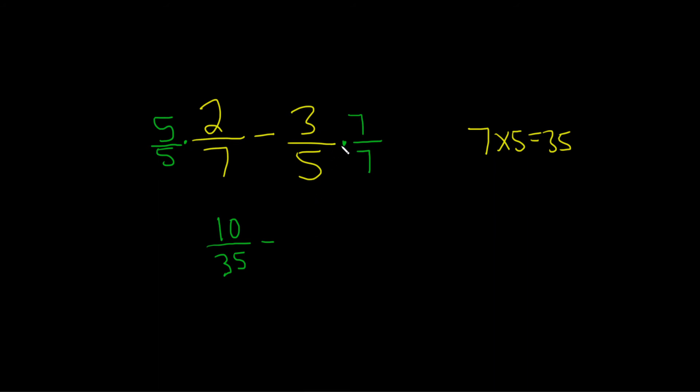The same thing you multiply across. 7 times 3 is 21. 7 times 5 is 35.